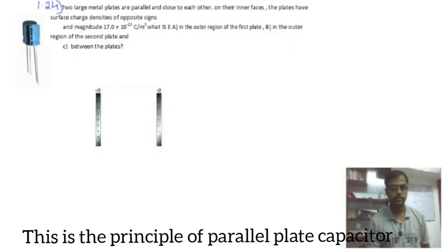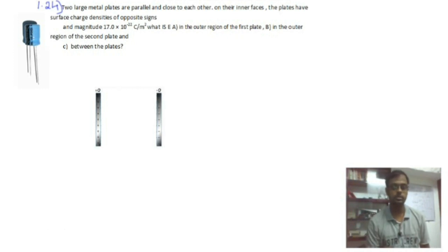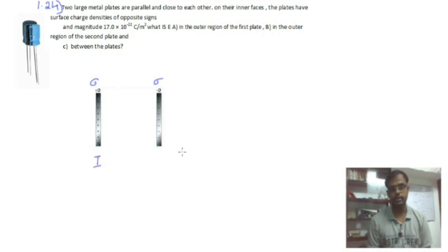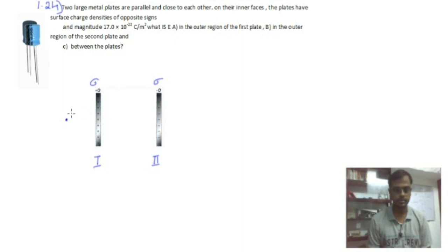Hi friends, today we are dealing with exercise question 1.24 — two parallel plate capacitors. One plate is charged with plus Q and another with minus Q, and each has surface charge density sigma. The first part asks for the electric field in the outer region of the first plate. This is the first plate and this is the second plate. We are going to find the electric field at three points: left side of the first plate, in between the two plates, and right side of the second plate.